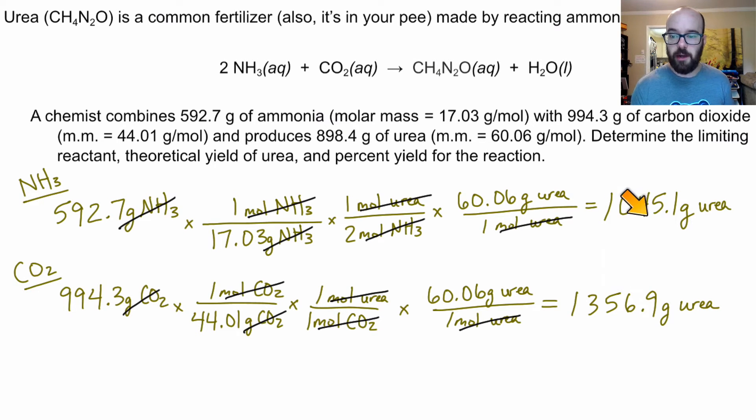Now I've got to compare these two answers. Which one should be my theoretical yield in this case? If this were the limiting reactant, we've got enough NH₃ to produce 1,045 grams of urea. We've got enough CO₂ to produce 1,356.9 grams of urea. If we've only got enough NH₃ to produce this number of grams of urea, we're going to run out of that as soon as we hit that amount of urea, meaning that we will not get to produce this 1,356.9 grams. Because at that point, we would have run out of NH₃.